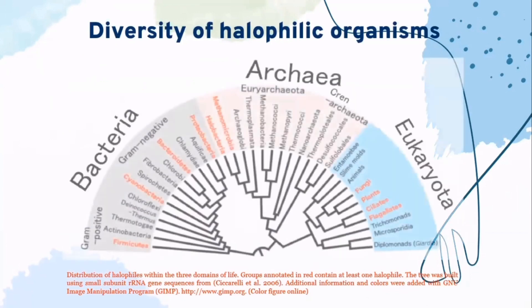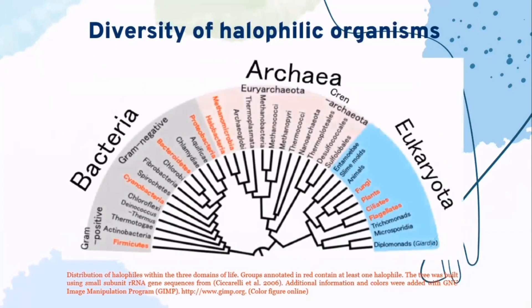Halophiles can be found in the three domains of life. This figure illustrates the distribution of halophiles within the three domains. Groups annotated in red contain at least one halophile. The tree was built using small subunit RNA gene sequences from Sicarelli et al. of 2006.